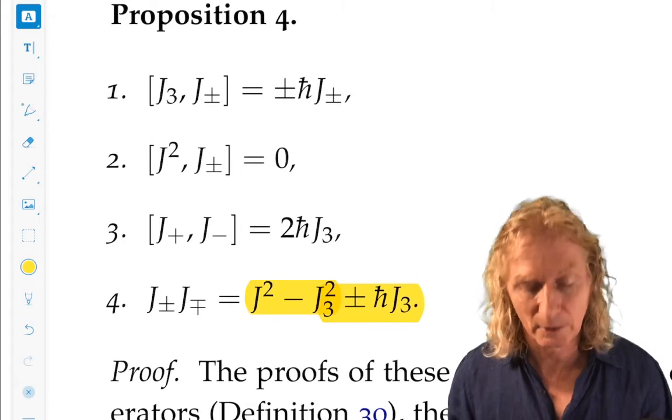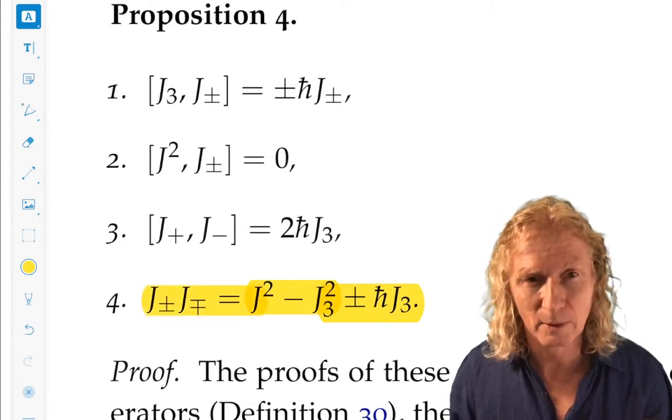But j-squared and j3 are on the right-hand side and this equality connects them. This will be very important.